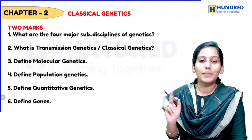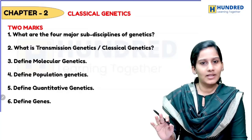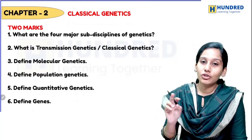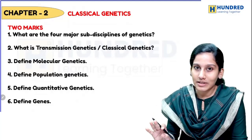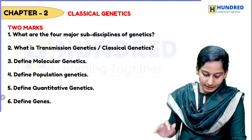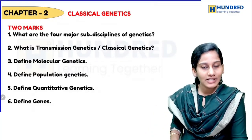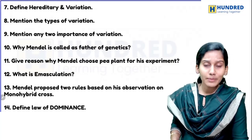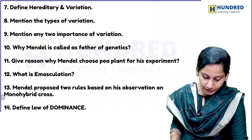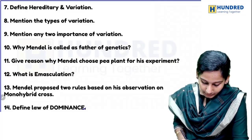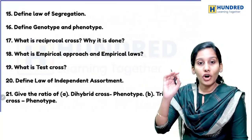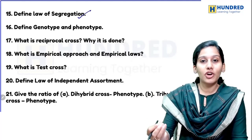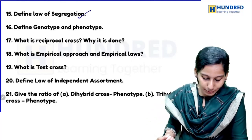Chapter two is classical genetics. Definitions are two-mark questions. Topics include gene and molecular genetics and classical genetics. Why is Mendel called the father of genetics? Law of dominance is a very, very important question. All the laws of Mendel — law of segregation and law of independent assortment — are important questions.